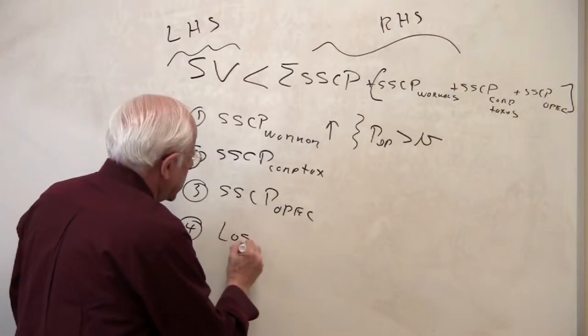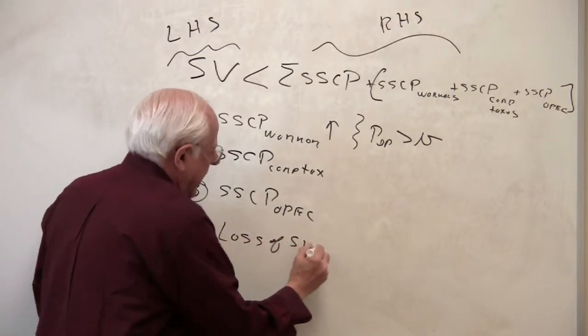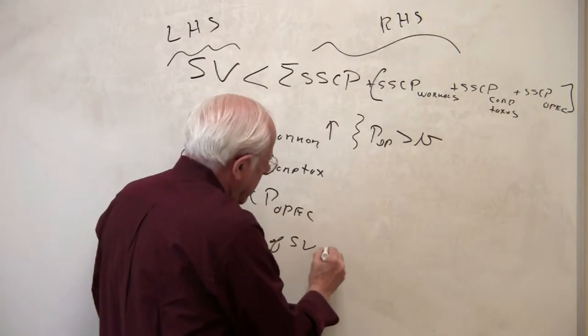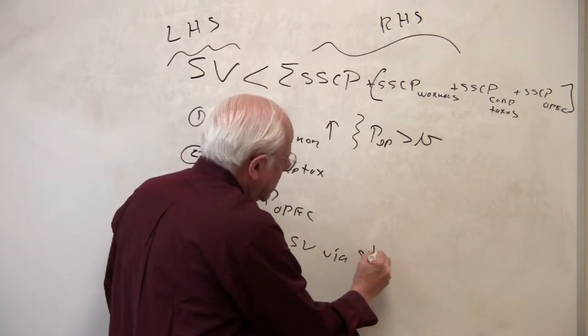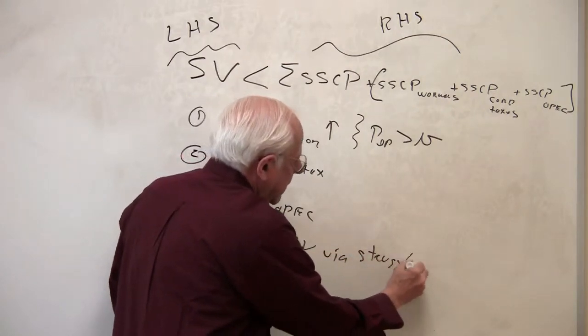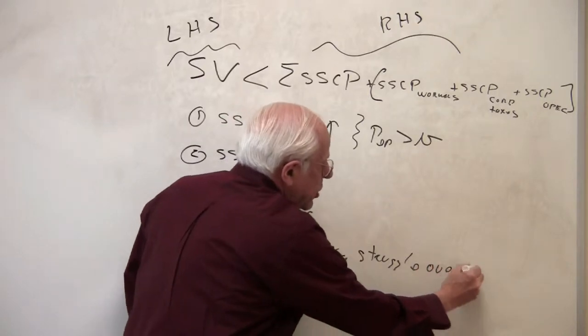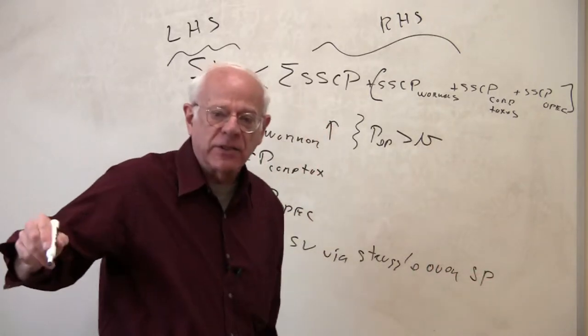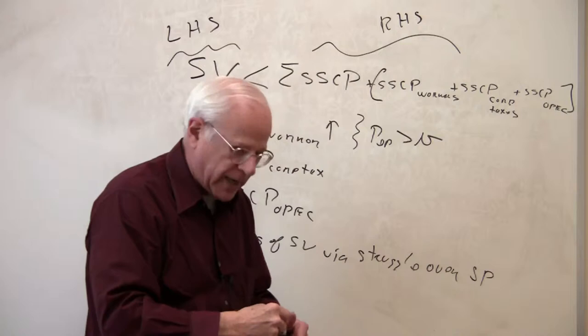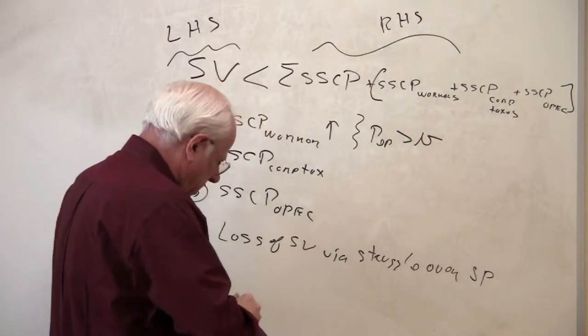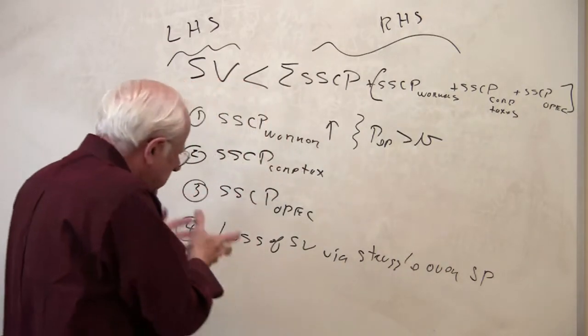This is a loss of surplus value on the left-hand side via a struggle over super profits that we discussed in this course. I gave you a couple of tables on that. Here, American capitalists are losing what?